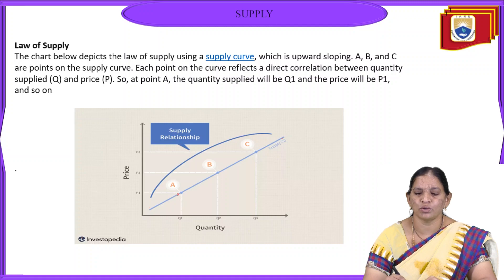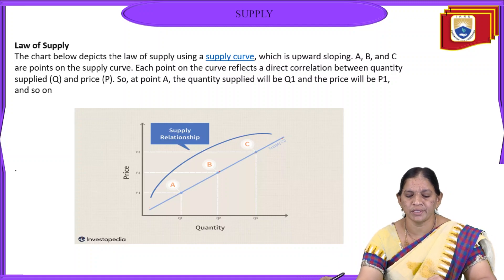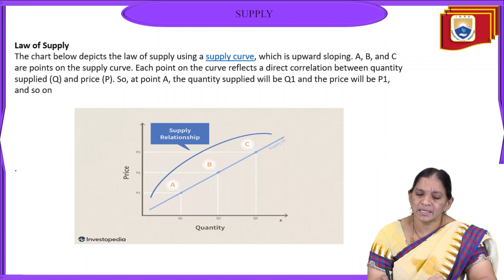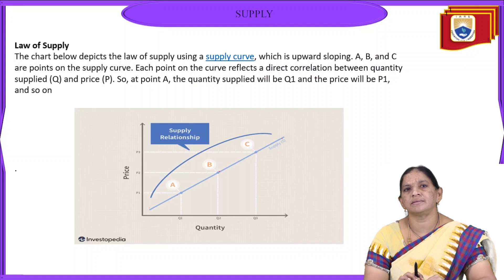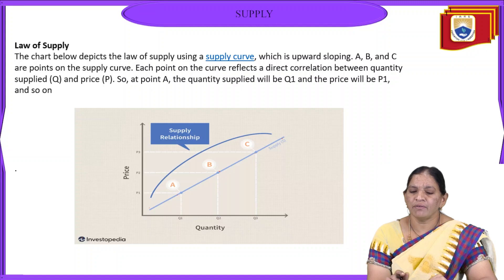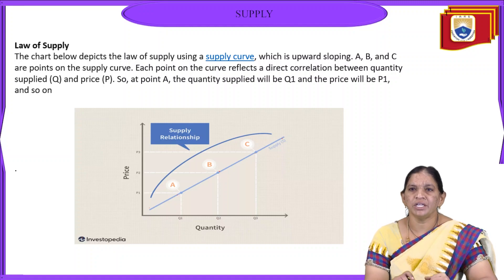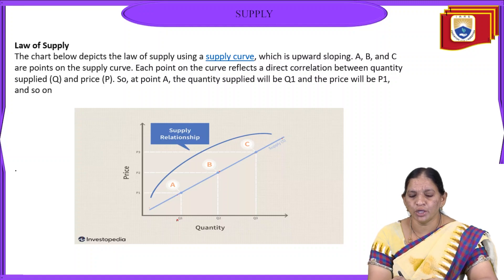We can see plots at points A, B, and C at different points, where the x-axis consists of quantity supplied and the y-axis consists of price of the product. Each point plotted on the graph reflects the direct correlation between the quantity supplied and the price P. At point A, the quantity supplied will be Q1.